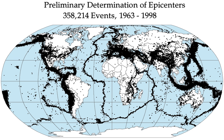An earthquake is the shaking of the surface of the earth, resulting from the sudden release of energy in the earth's lithosphere that creates seismic waves. Earthquakes can range in size from those that are so weak that they cannot be felt to those violent enough to toss people around and destroy whole cities. The seismicity, or seismic activity, of an area is the frequency, type and size of earthquakes experienced over a period of time.